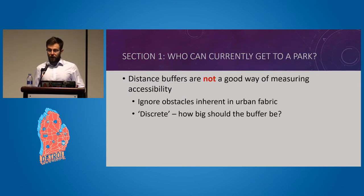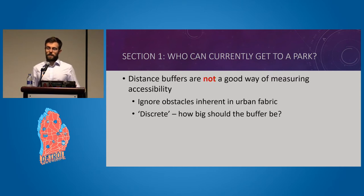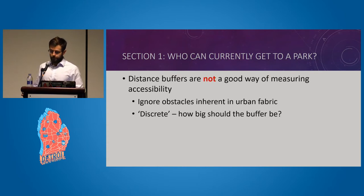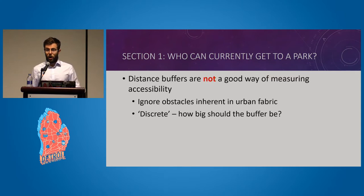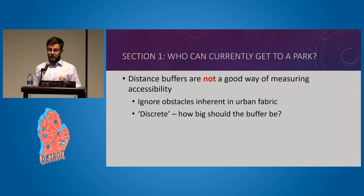The first part is about how OSM supported our access analysis, and the second will be about how OSM was critical to the machine learning solution we put in place to appraise park quality. Historically, people in development use distance buffers to approximate service catchment areas from points of service. But it's not good enough to apply a distance buffer to green assets — urban objects like highways, water bodies, dense vegetation, and gated communities all prevent straight-line travel from being a good assumption.